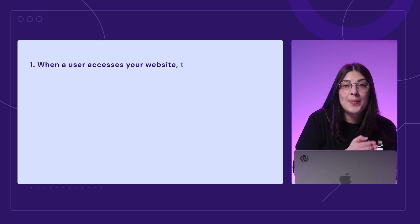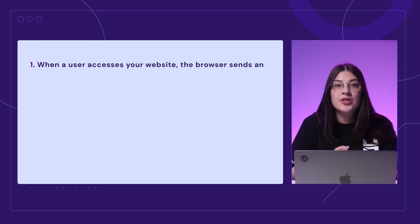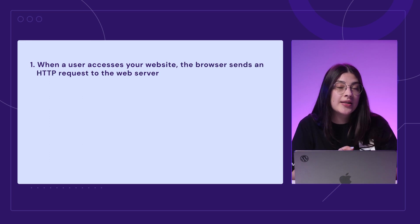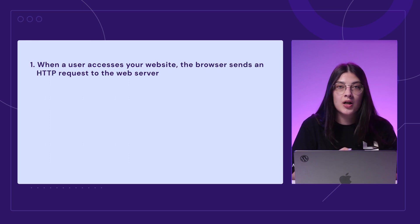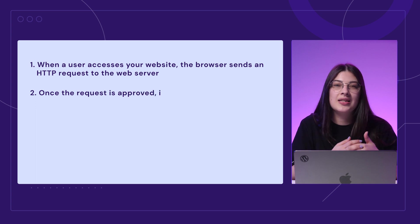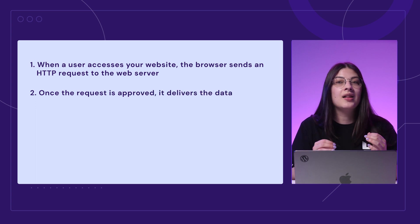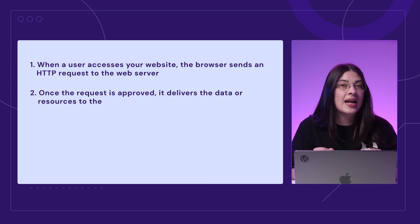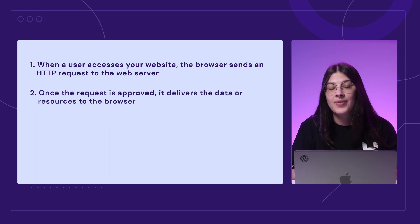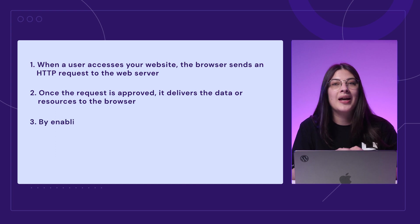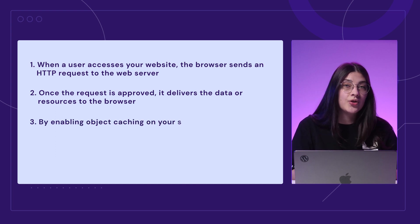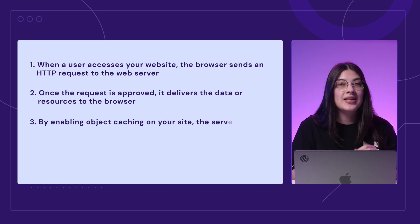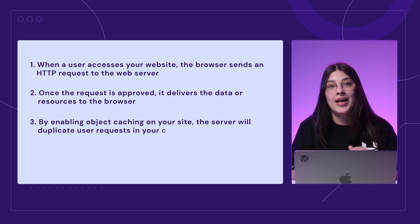It's divided into four steps. First, when a user accesses your website, the browser sends an HTTP request to the web server. Second, once the request is approved, it delivers the data or resources to the browser. Third, by enabling object caching on your site, the server will duplicate user requests in your cache.